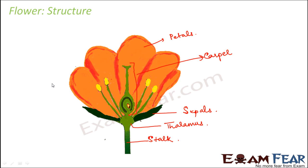Besides the carpel, you will also see thin structures with swollen heads, and they occur in multiple numbers — just thin structures with swollen heads. These structures are called stamens. Stamens are the entire structures: the thin rod plus the swollen head. These are the important parts of a flower.